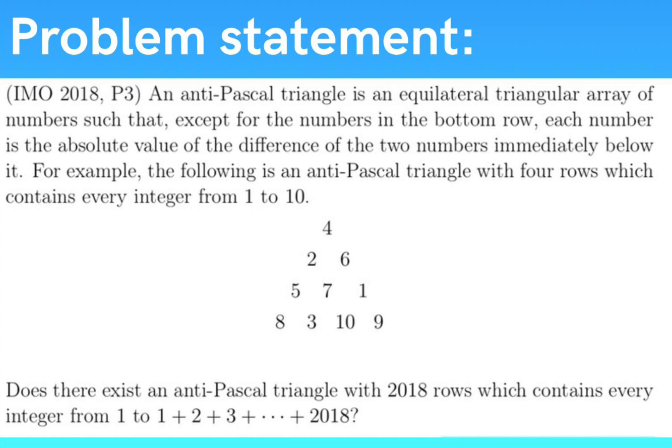For example, the following is an antipascal triangle with 4 rows, which contains every integer from 1 to 10. And they are asking us to determine whether there exists an antipascal triangle with 2018 rows containing every single integer from 1 to the 2018 triangular number.